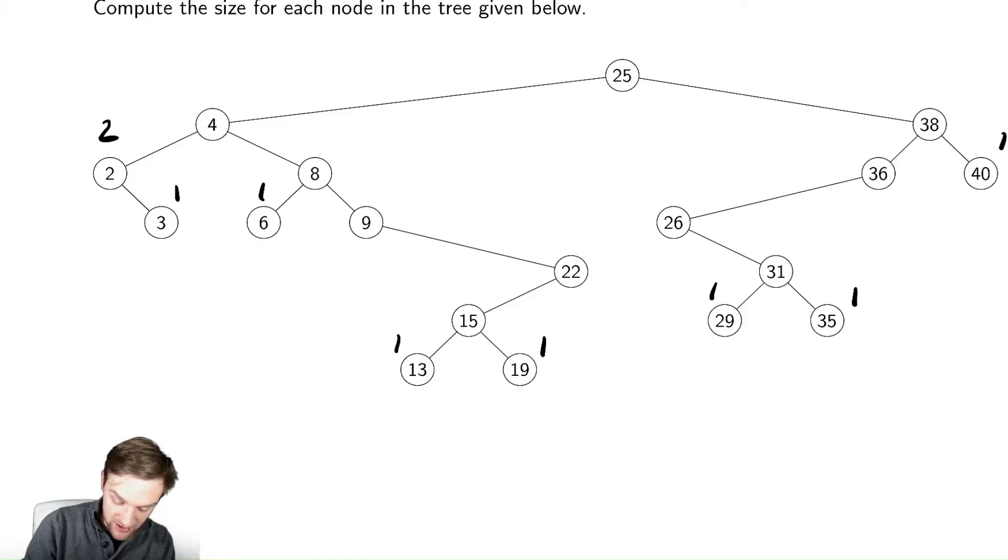Node 6, I got some more work to do. 13 and 19, those go to 3 because node 15 has two children. 29 and 35, we have 3, and over there we have more work to do.